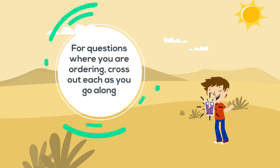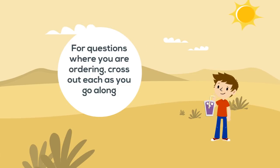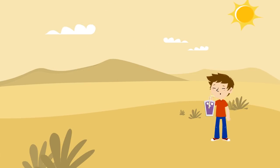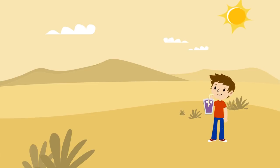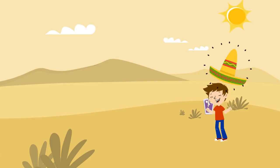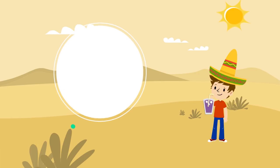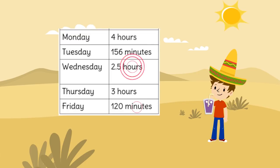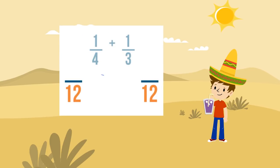For questions where you are ordering, cross out each item as you go along. This helps you not forget any by mistake. Remember to make all your units the same before calculating — be careful with questions that have a mixture of both hours and minutes, or where denominators need to be made the same before calculating.